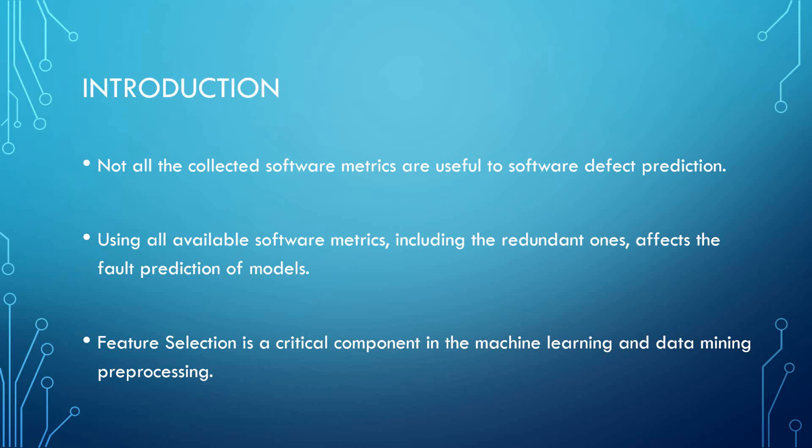Available software quality prediction datasets often include redundant and irrelevant software metrics. Using all available software metrics, including the redundant ones, affects the prediction of models. In software defect prediction, identification and selection of relevant metrics from a metric dataset is very important. This process is called feature or metric selection, and it is a critical component in data mining or machine learning pre-processing. One common way to evaluate a feature selection method is the performance of a chosen classifier trained on the selected features — the classification performance reflects the effectiveness of the feature selection technique used to identify the most relevant metrics.